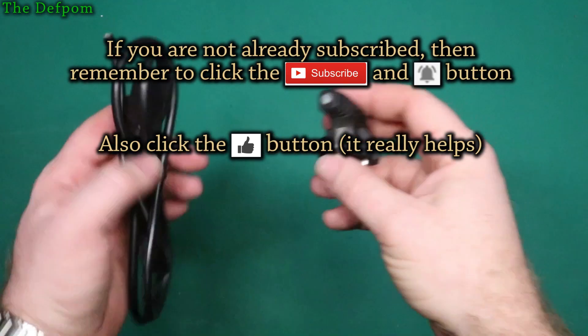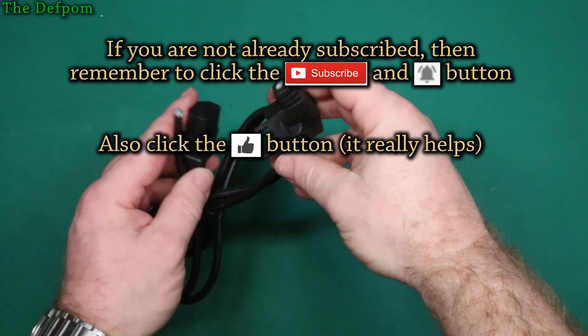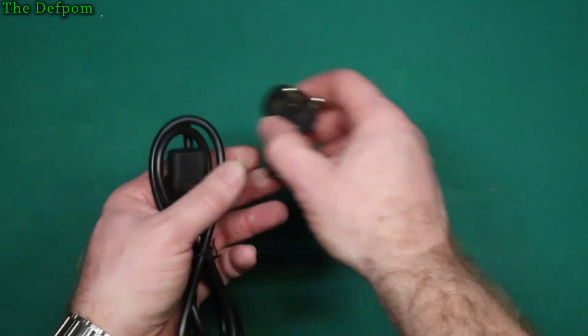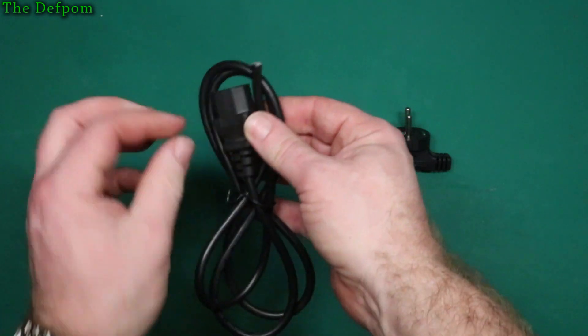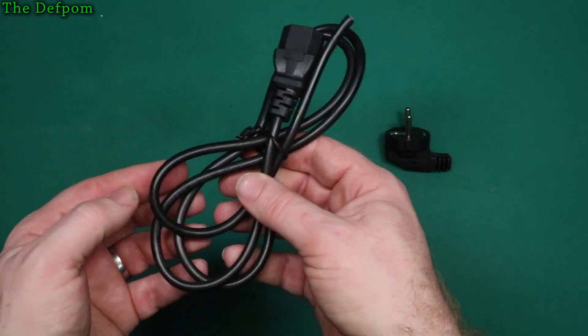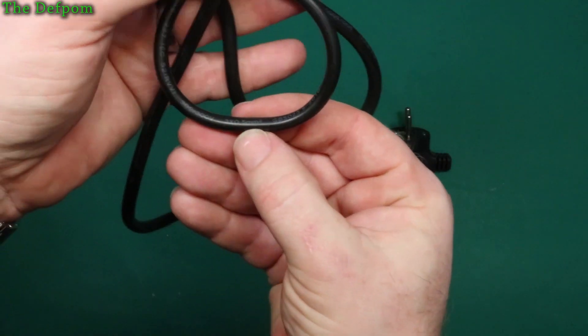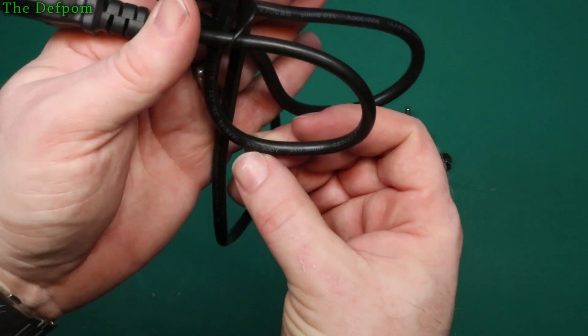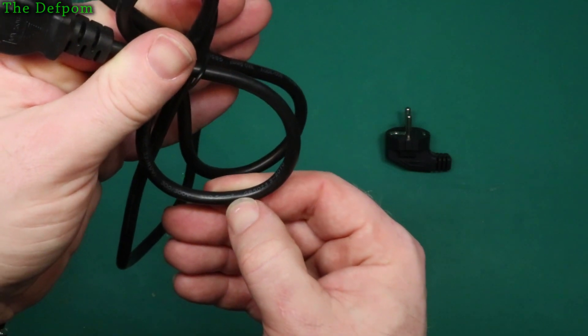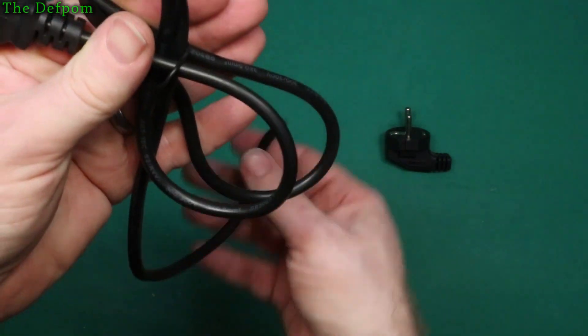So here's a power cord which came with a power supply from China. The plug here is marked as 10 amp 250 volt, which okay, that's fair enough. This plug is marked as 10 amp 250 volt. Then you look at the wire right there. It says 300/300 volt, 3 by 0.5 millimeter square, 0.5 mil cable.